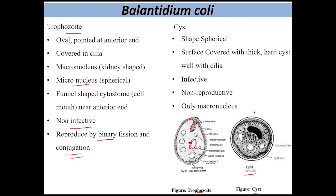The cyst stage is spherical or oval in shape, and the surface is covered with thick cilia. It also has a cyst wall. Because they are covered with cilia, they are classified as ciliated protozoa. The cyst stage is the infective stage, and cysts are non-reproductive.